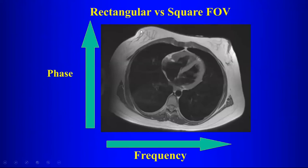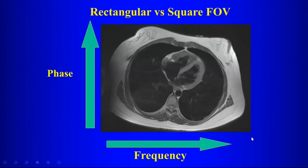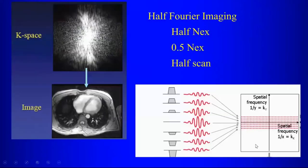With rectangular versus square field of view: if you have a body dimension that is shorter than another, it makes the most sense to make that your phase encoding axis, because you have fewer pixels in that direction. The number of phase encoding steps you have to do is reduced if you apply them along the shorter axis. That's the advantage of a rectangular versus a square field of view.